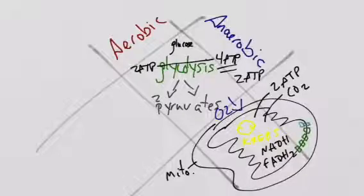The electron transport chain occurs on the inner mitochondrial membrane. Protein complexes are embedded in this membrane along with ATP synthase.